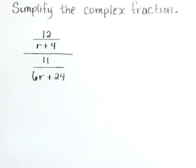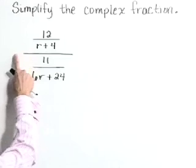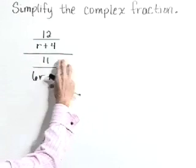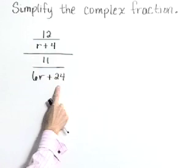Simplify the complex fraction. Here we have 12 over r plus 4 divided by the fraction 11 over 6r plus 24.